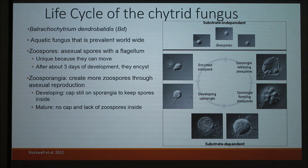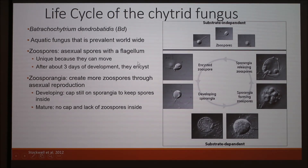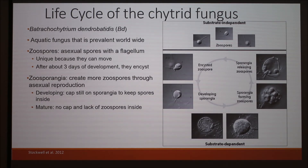It's really important to understand the life cycle of this. The actual scientific name is really long — it's Batrachochytrium dendrobatidis — we practiced that multiple times this summer because it's hard to say, but we just call it BD. BD is an aquatic fungus, which is why frogs can get it — it's able to live in water. It produces zoospores, which are asexual spores. Something really unique to BD is that they actually have a flagellum so they can move through the water, whereas zoospores of other fungi don't have a flagellum. After about three days, they encyst and become what are called sporangia.